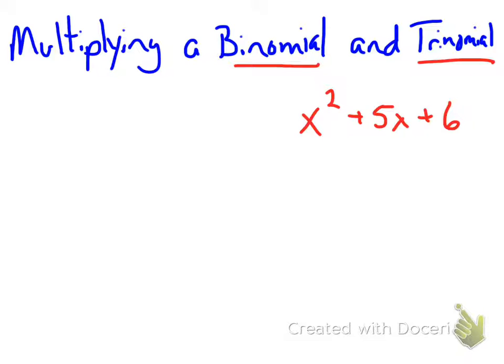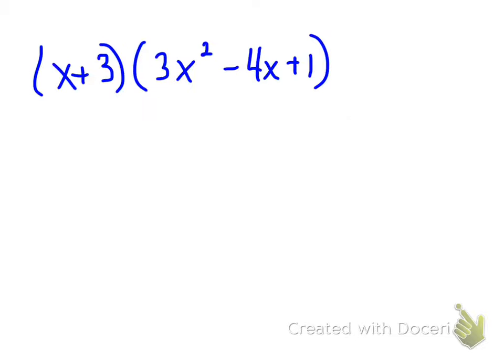So, if we look at a different example, x plus 3 is our binomial, and 3x squared minus 4x plus 1 is our trinomial.